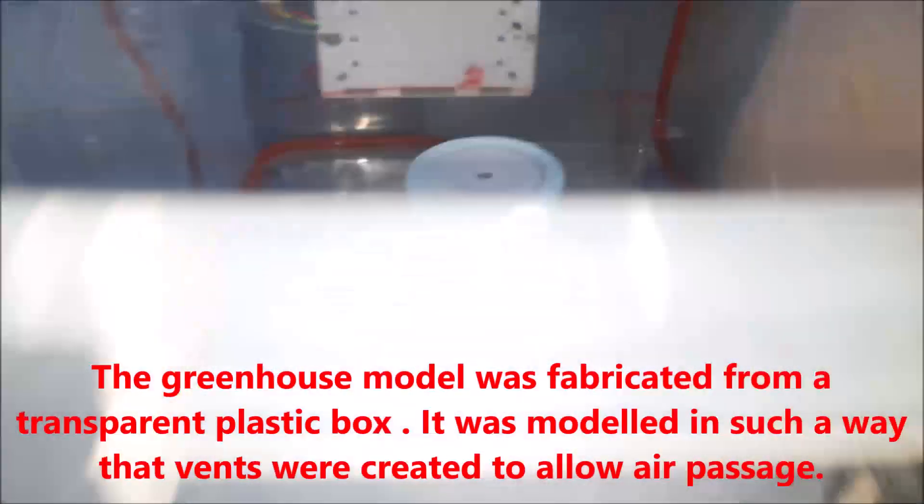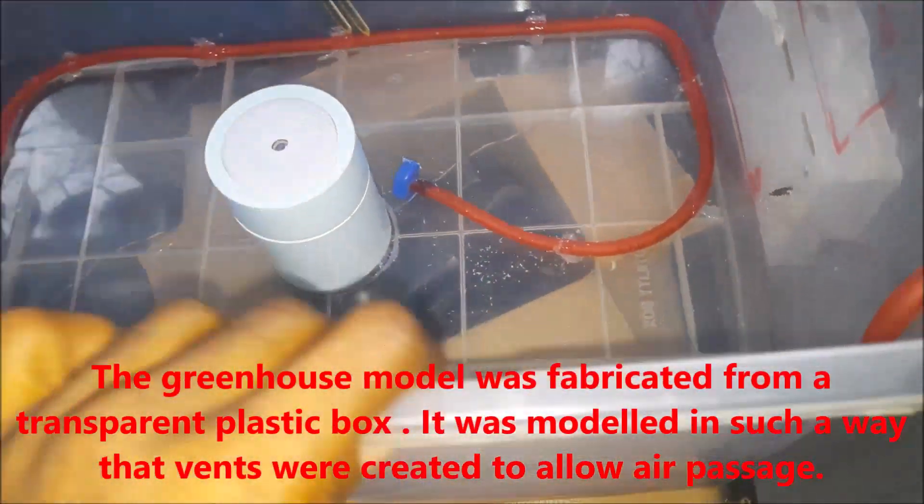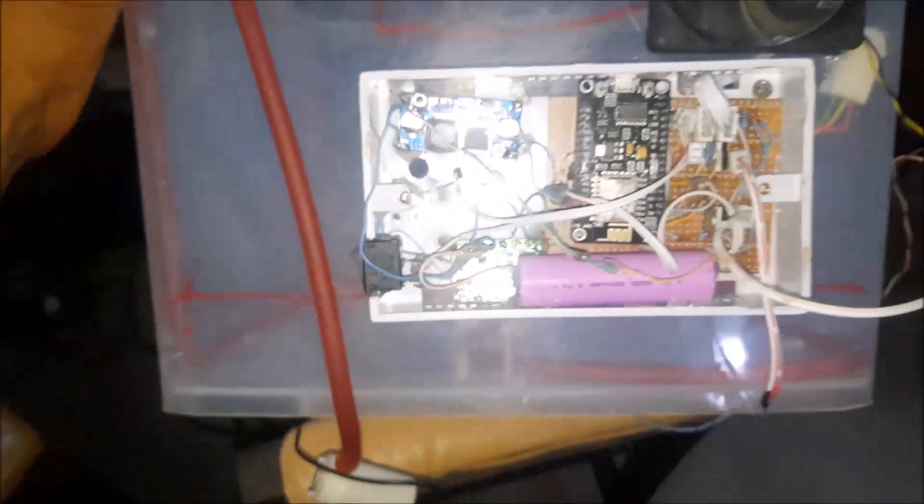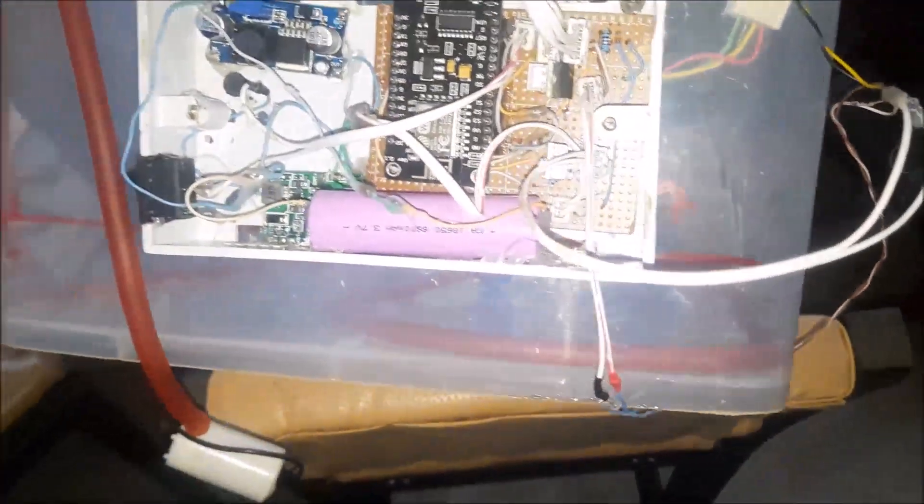The greenhouse model was fabricated from a transparent plastic box. It was modeled in such a way that vents were created to allow air passage. Two DC fans were placed on adjacent sides. This will serve as the extractor fan and the air inlet fan.